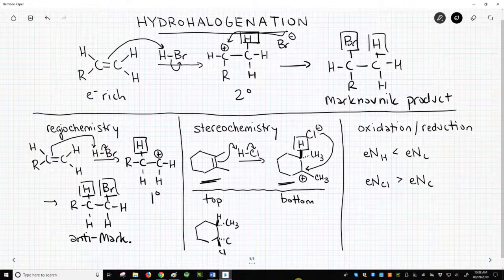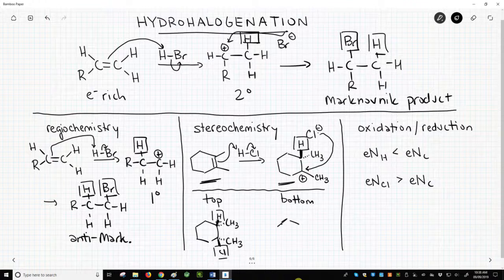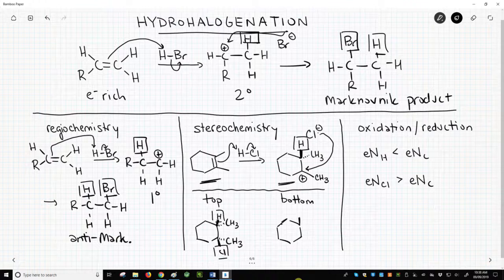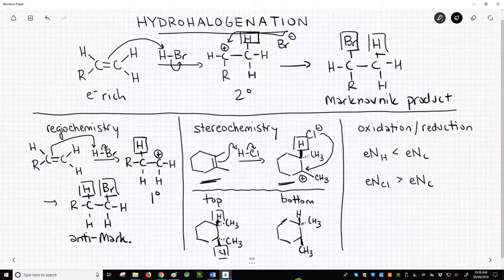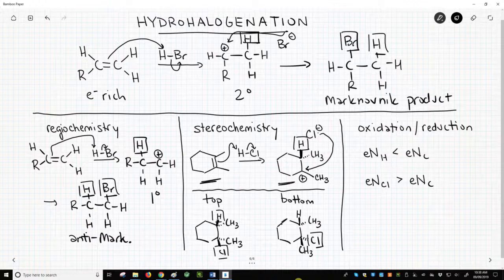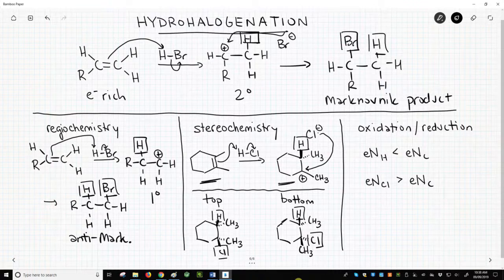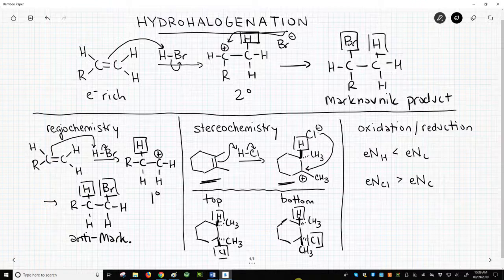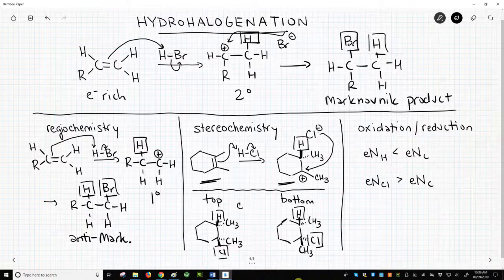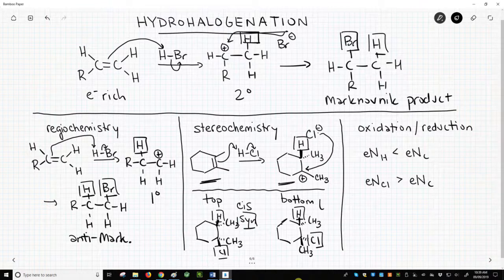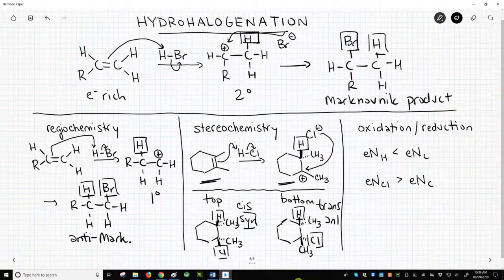Or from the bottom face with the chlorine being down and the methyl up. As it turns out, there is no preference, and we'll get a 50-50 mix of the H and Cl being either cis, which is the syn product, or trans, which is the anti product.